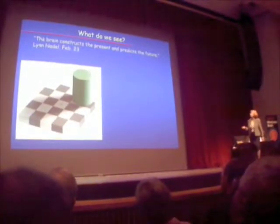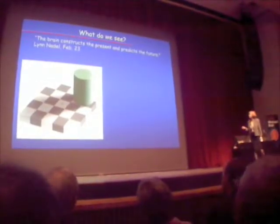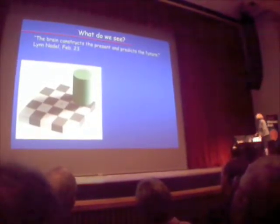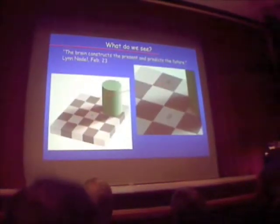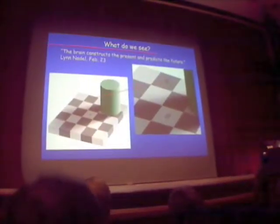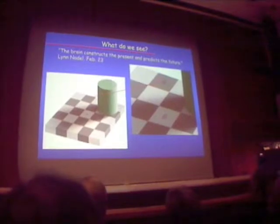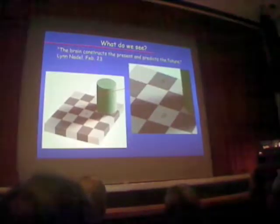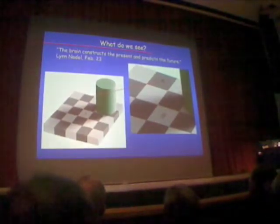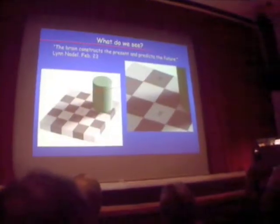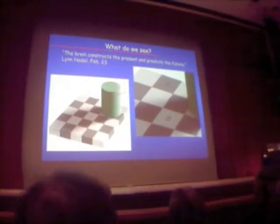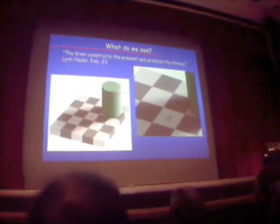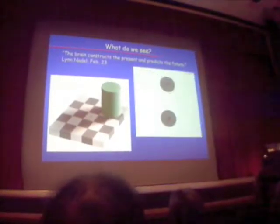In fact, what I'll show you is that that's not the case at all. So let's blow up square A and square B. And now we're going to put a mask over them so that you can compare the gray levels in the two squares.